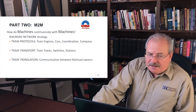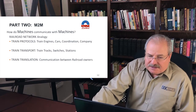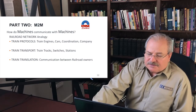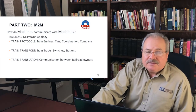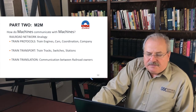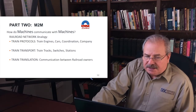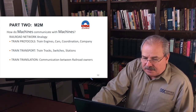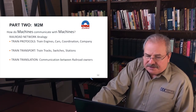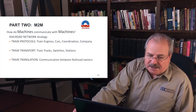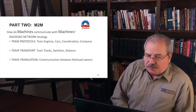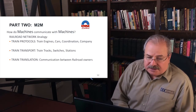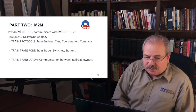As I mentioned in part one, I like to use analogies to take the known and bridge it over to the unknown. The best analogy I came up with to communicate how machines talk to machines is a railroad network analogy. You can basically break down the railroad industry into three different areas: train protocols, train transportation requirements, and train translation requirements.